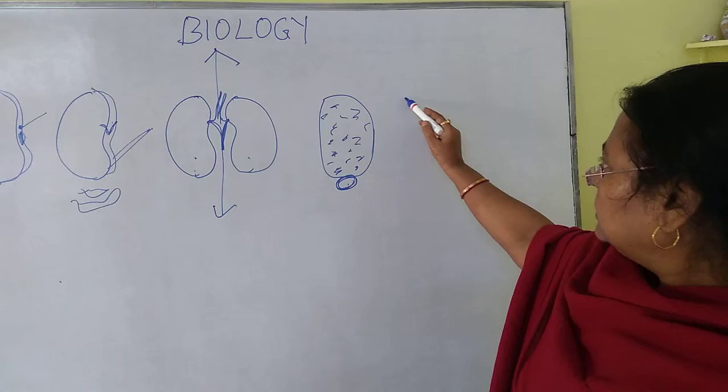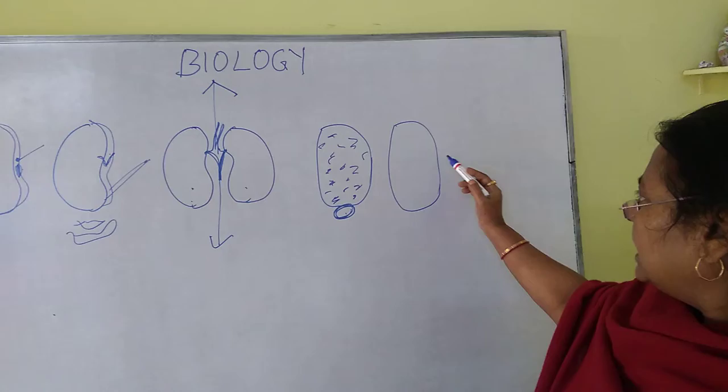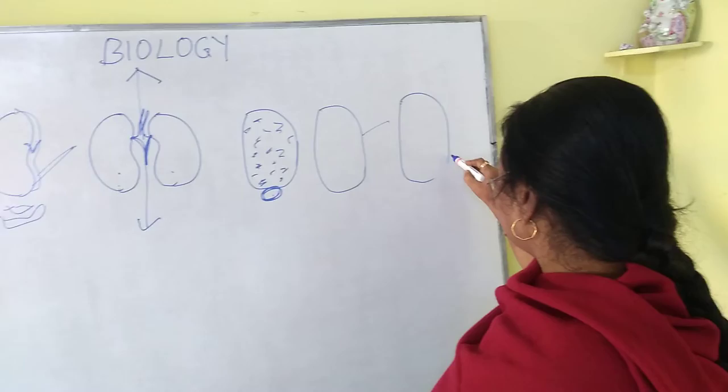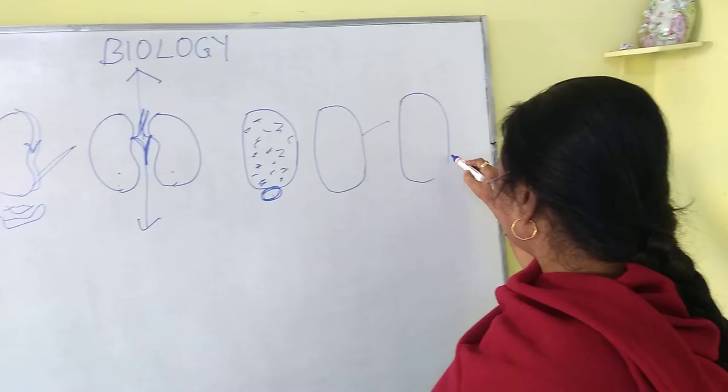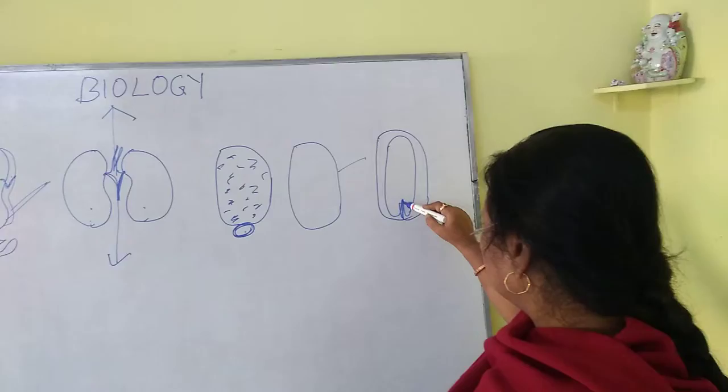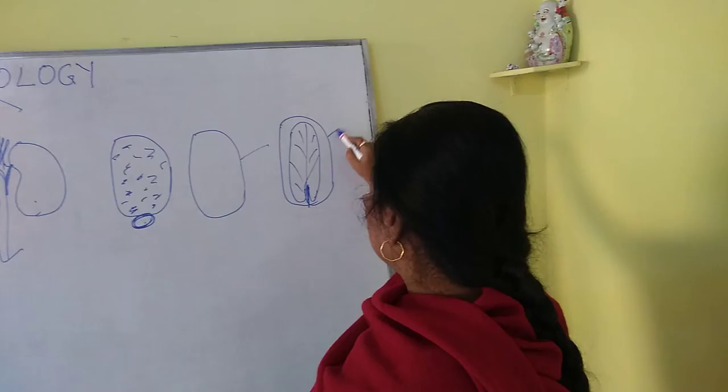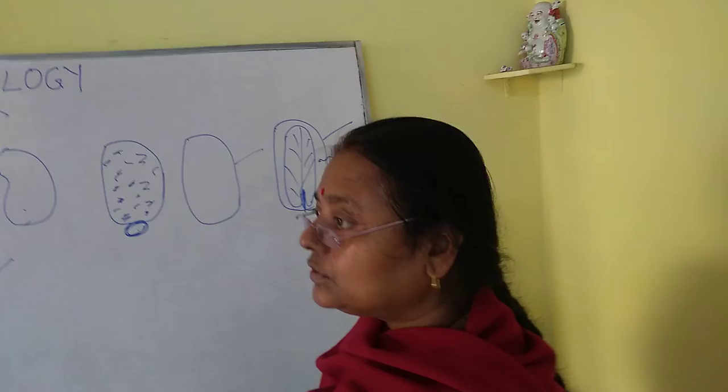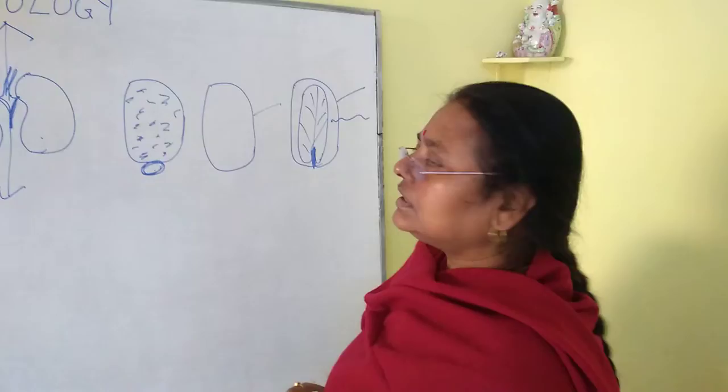On removing the testa, the caruncle also comes out, and the tegmen is silvery white in color. When we cut the seed, we find a flat, thin cotyledon. The tegmen is visible, then the endosperm, then the cotyledon, and finally the embryonal axis. The cotyledon may seem big but it is flat — the surface is flat and broad.